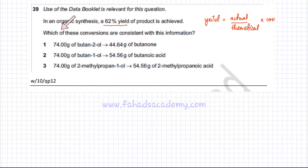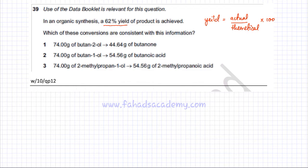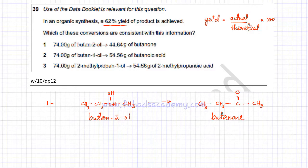The question asks which of these conversions are consistent with this information. There are three options given. The first option is 74 grams of butan-2-ol getting converted into 44.64 grams of butanone. I'm going to first pick option 1 and see whether this is equal to 62% yield.